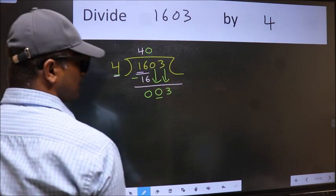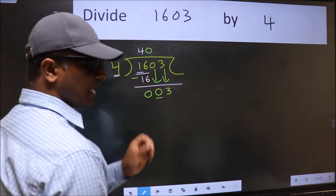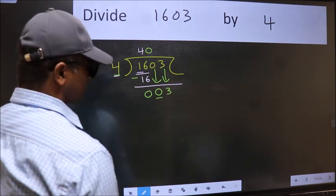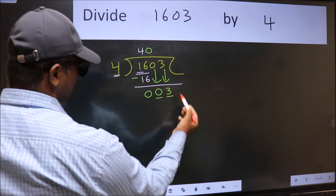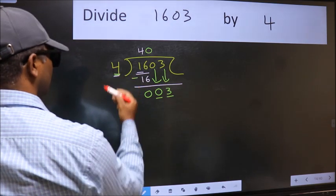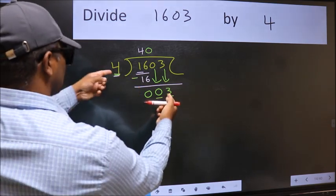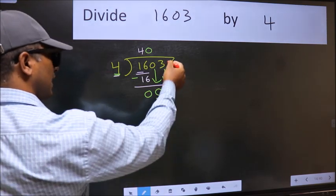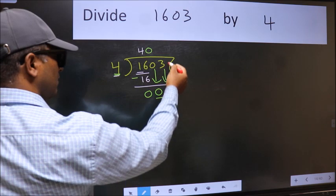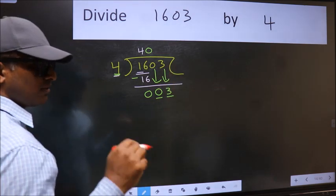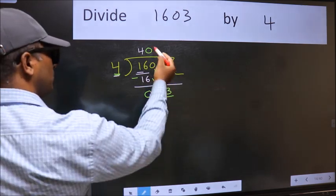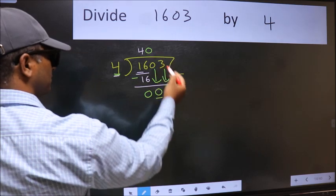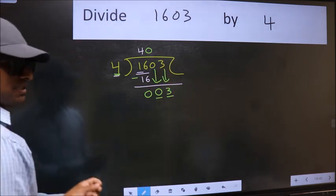After this step, the mistake happens and the mistake is this. Here we have 3 and here 4. 3 is smaller than 4. And we don't have any more numbers to bring it down. So, what many do is they directly put dot, take 0, which is wrong.